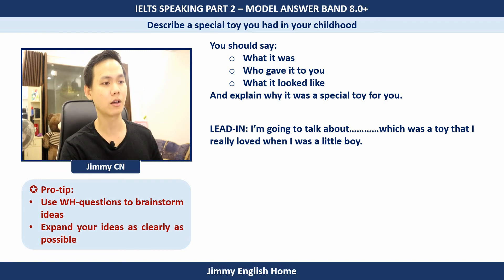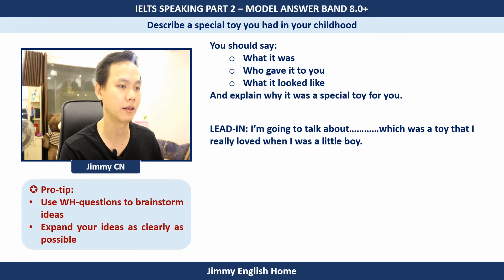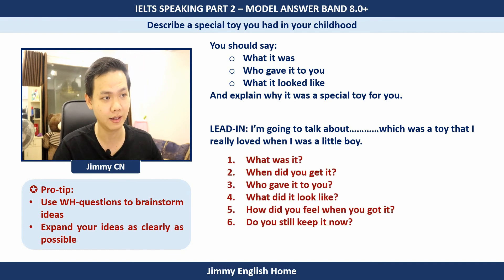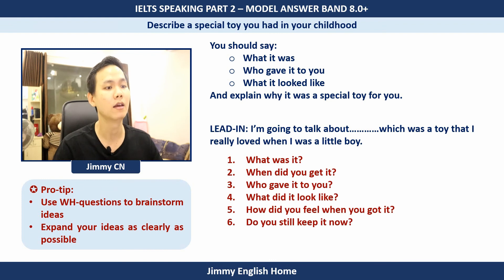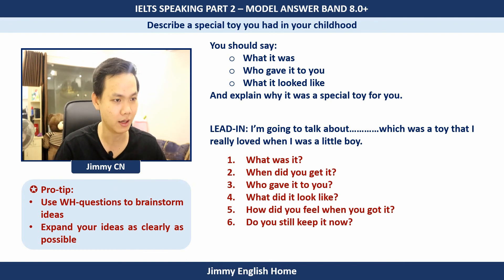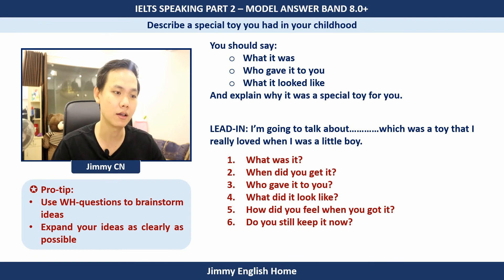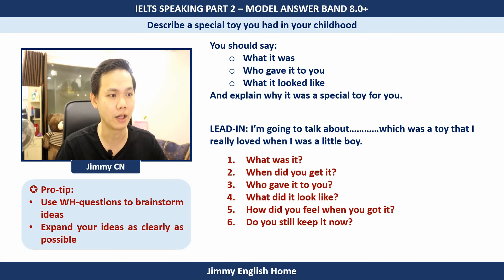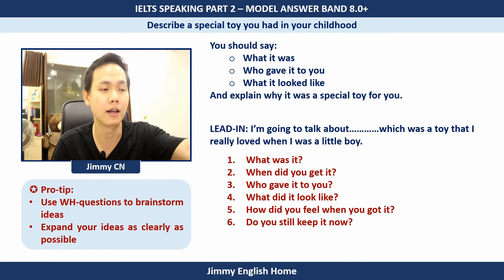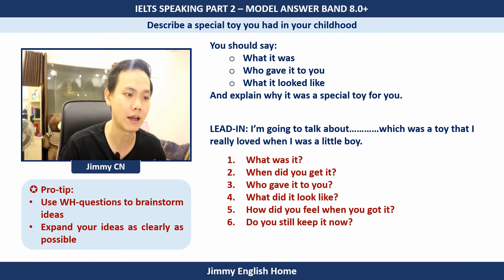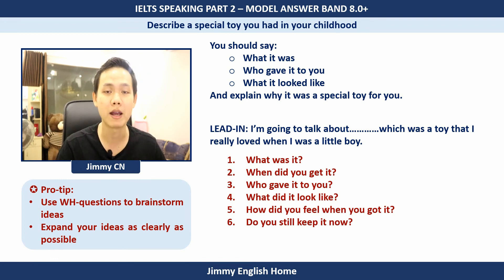Here are the specific WH questions I've prepared for this topic that you can reference: What was it — directly answering what the special toy is; When did you get it — when you received the toy; Who gave it to you — borrowed from the given cue; What did it look like; How did you feel when you got it; and Do you still keep it now? These are my own cue questions — I don't follow the topic's suggested cues 100%. I create the content for my own answer as long as it doesn't go off-topic.